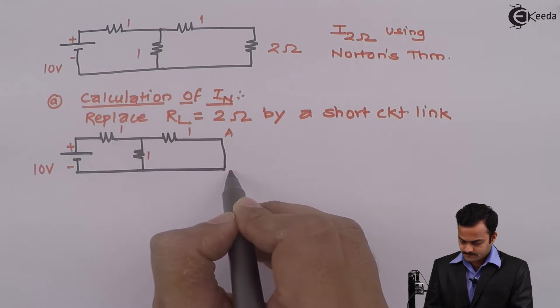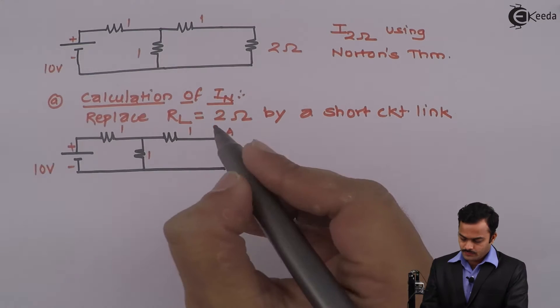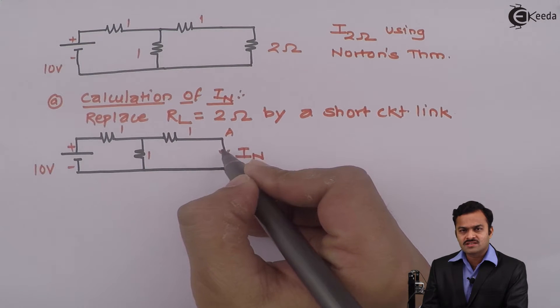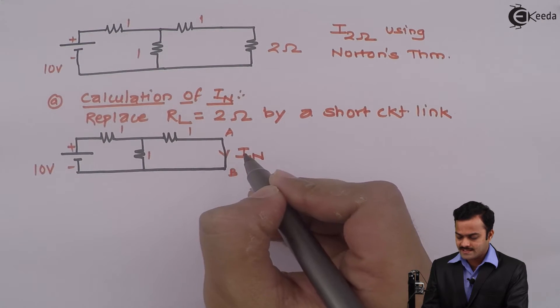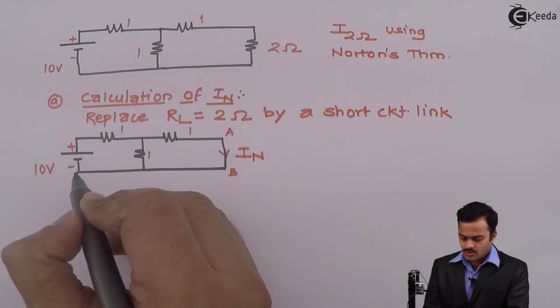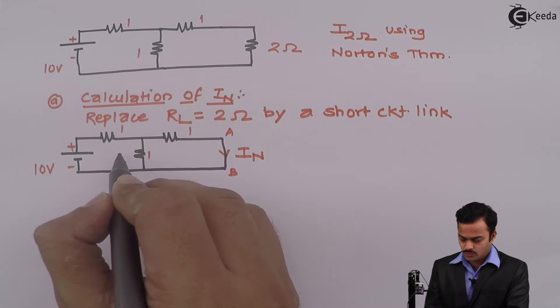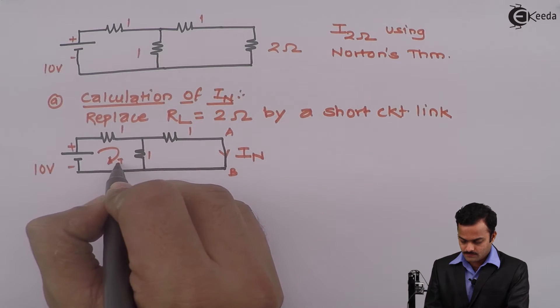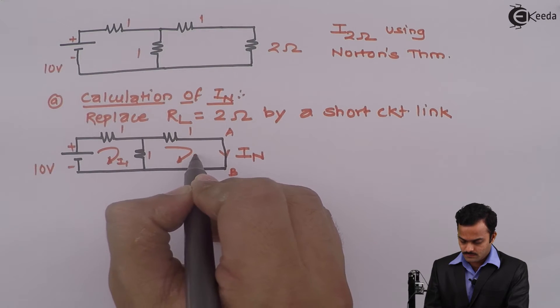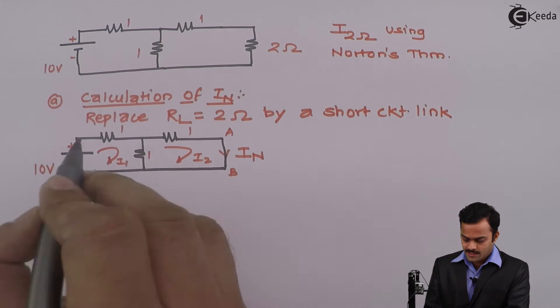So we are supposed to find out a current flowing through this link which we denoted as IN. So I will use the mesh analysis, two loops, two loop currents I1, I2.